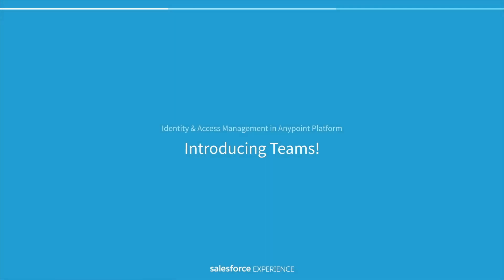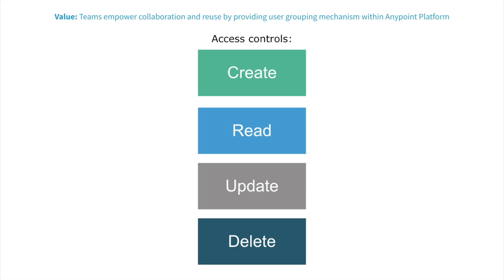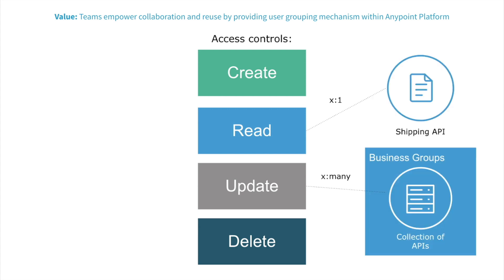Before we jump into the demo, I wanted to quickly review the basics of access management within the AnyPoint platform. In this diagram, you can see access controls in the middle. For simplicity, they are abstracted with familiar CRUD. On the right-hand side, we have resources such as API proxies in API Manager or assets in Exchange.